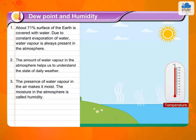The presence of water vapor in the air makes it moist. The moisture in the atmosphere is called humidity.